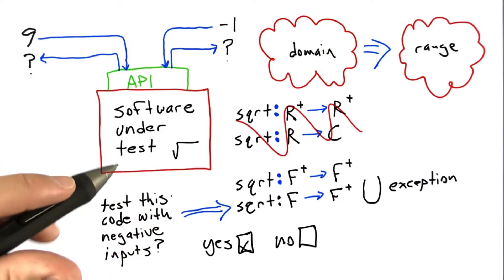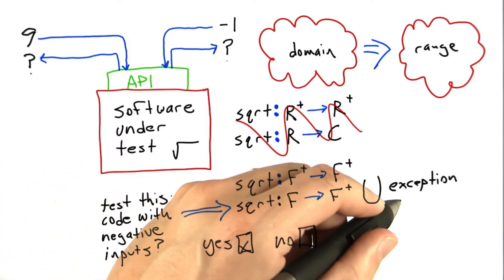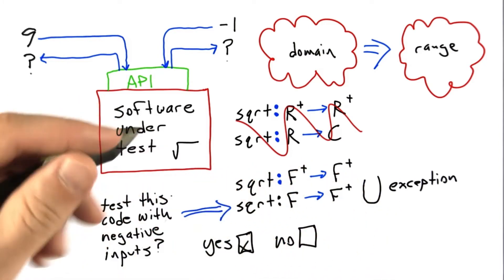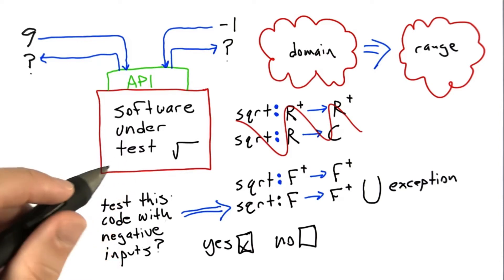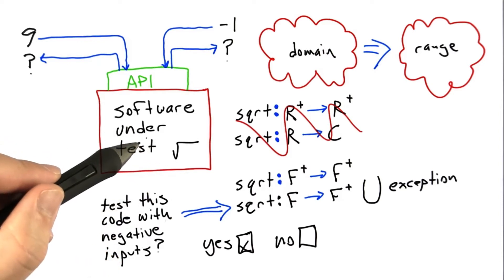It will crash with some sort of a bad error, perhaps not through an exception, but rather actually exit abnormally. And what you'll do is you'll go to the developer of the software under test, and you'll say...